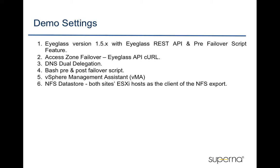Another base script is created and enabled as the post-failover script to remount the NFS datastore on the recovery site, add the VM to the inventory, and then power on the VM. This solution includes the vSphere Management Assistant (VMA) appliance as the proxy between EyeGlass and the vSphere infrastructure. The pre and post failover scripts are based on executing commands on vCenter server or ESXi host through this VMA. For the NFS datastore, we need to add both ESXi primary and secondary host IP addresses as clients of this NFS export.